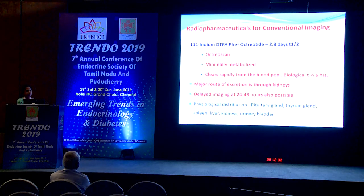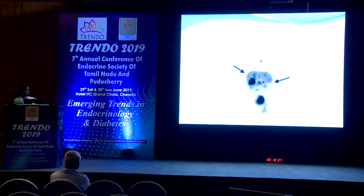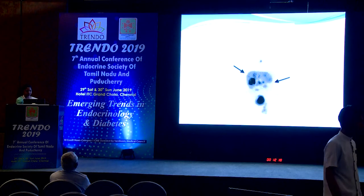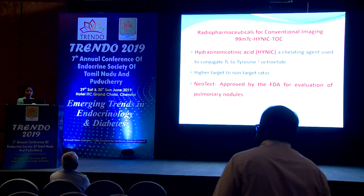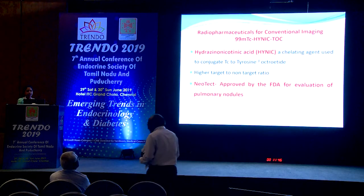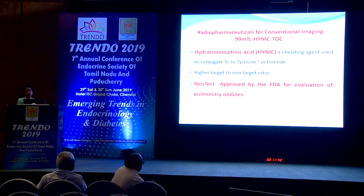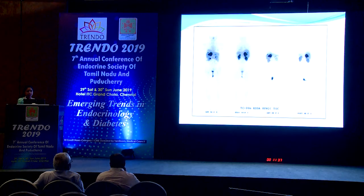Octreoscan imaging is done with a gamma camera. Then from iodine and indium, we moved to Technetium-99m HYNIC-TOC: HYNIC is the chelating agent, TOC is octreotide, and Technetium-99m is the radionuclide. This offered better image quality and higher target-to-non-target ratio. Another FDA-approved tracer, NeoTect, was approved for evaluation of pulmonary nodules in cases of neuroendocrine tumor metastasis.